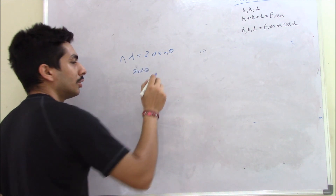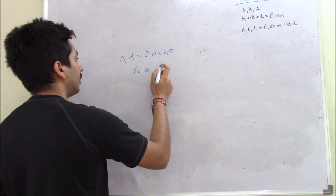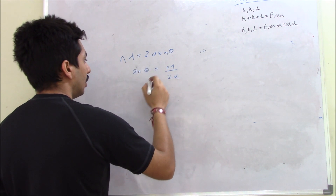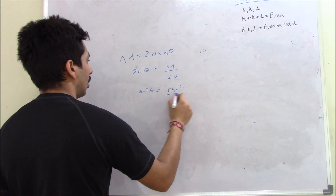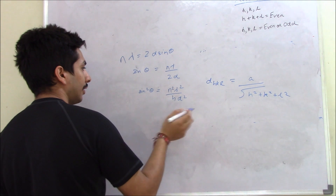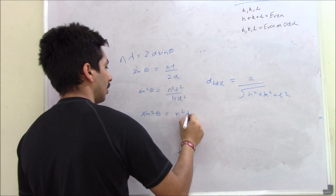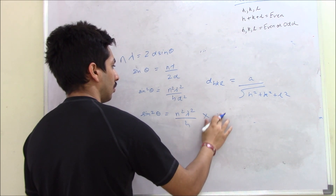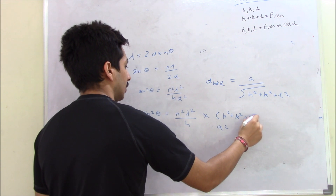In XRD we measure the diffracted angle, so you need to find out the value of sin²θ. sin θ = nλ/2d, so sin²θ = n²λ²/4d². And if we replace this value, we get sin²θ = n²λ²/4 · (a²/(h²+k²+l²)), where a is the edge length.